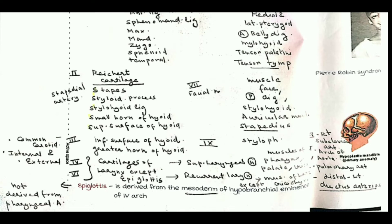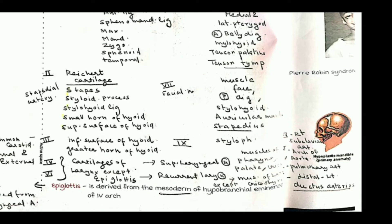The fourth and sixth arches together correspond to the cartilages of the larynx, but not the epiglottis. The epiglottis is derived from the mesoderm of the hypobranchial eminence of the fourth arch, not from the pharyngeal arches directly. The nerve of the fourth arch is the superior laryngeal nerve, whereas the sixth arch nerve is the recurrent laryngeal nerve.